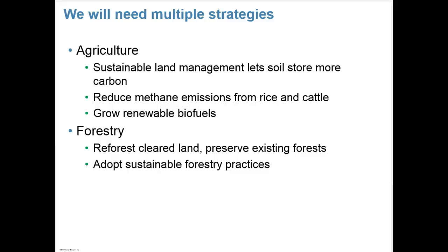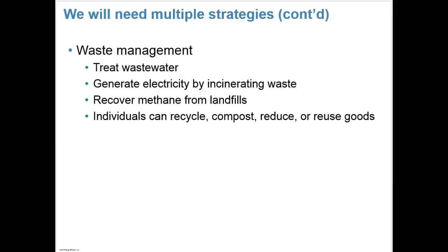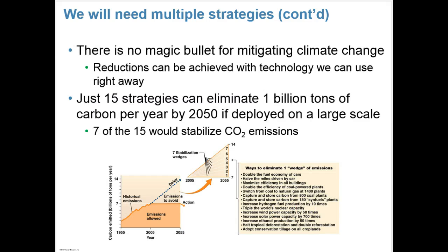Agriculture needs to develop sustainable practices, reduce methane emissions from rice and cattle, and grow renewable biofuels. In forestry, we need to reforest cleared land, preserve existing forests, and adopt sustainable practices. In waste management, we need to treat wastewater, generate electricity by incinerating wastes, and recover methane from landfills. Individuals can recycle, compost, reduce, and reuse. There's no magic bullet for mitigating climate change, but just 15 strategies can eliminate 1 billion tons of carbon per year by 2050 if deployed on a large scale — and 7 of the 15 would stabilize CO2 emissions.